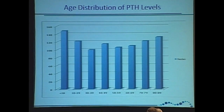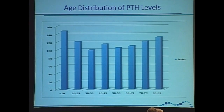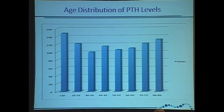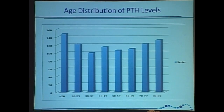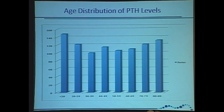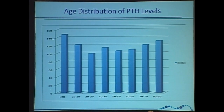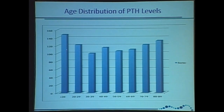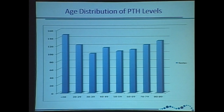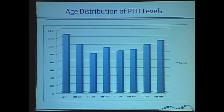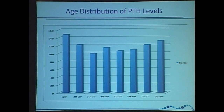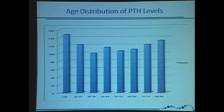Age distribution — just like calcium, there's a little bit of a difference. With teenagers, we see a bimodal curve with age. Our younger folks and our older folks tend to have statistically higher PTH levels as a group, and we can get into why that is.